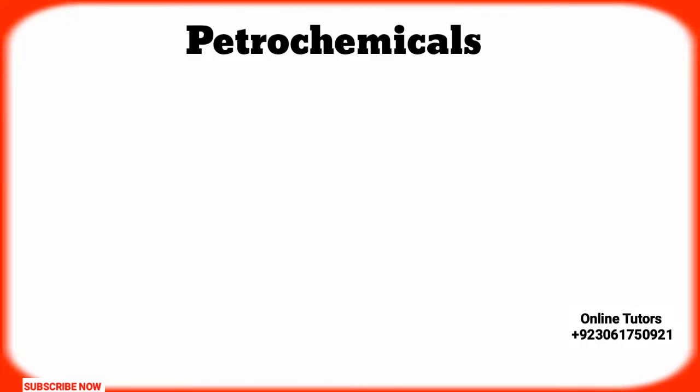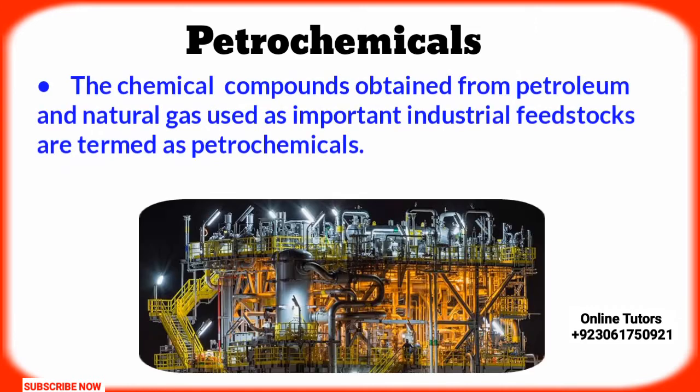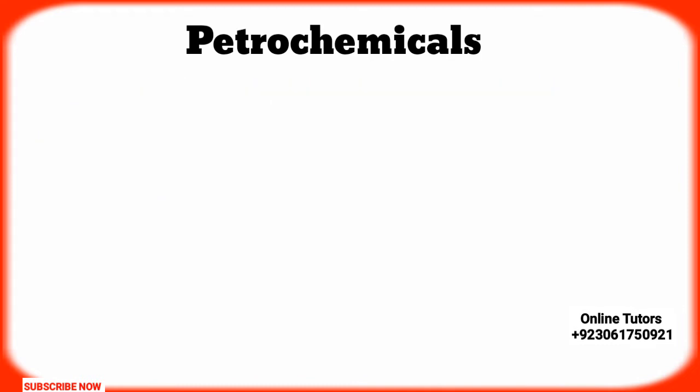First of all, we discuss the definition of petrochemicals. The chemical compounds obtained from petroleum and natural gas, used as important industrial feedstocks, are termed as petrochemicals.